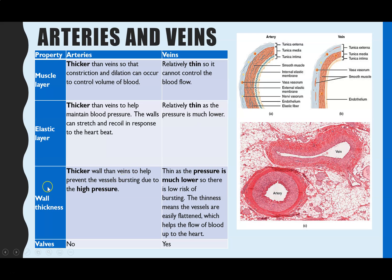Overall, the wall is much much thicker in an artery and much much thinner in a vein. The third tissue type refers to valves: arteries do not have valves, but veins do. Valves are flattened flaps which help prevent the backflow of blood. That completes our comparison of arteries and veins.